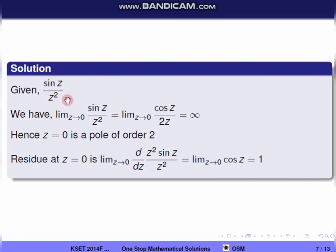First we find the singularity. Limit z tends to 0 of f(z) = sin(z)/z². Directly applying the limit gives 0/0 form, so we apply L'Hôpital's rule. This gives limit z tends to 0 of cos(z)/(2z), which equals 1/0 as z→0, that is infinite. So z = 0 is a pole of order 2 since z is squared.